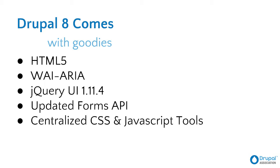Another major improvement is WAI-ARIA — the Web Accessibility Initiative of the World Wide Web Consortium's Accessible Rich Internet Applications suite. Those tools give additional semantic information useful largely to screen readers, but not just to screen readers. There's an opportunity to use this additional semantics to give context to people building websites. Drupal is also coming with the latest version of jQuery UI, which has a number of accessibility improvements. There's a great team at the jQuery community working on accessibility issues.